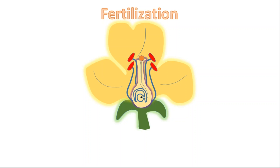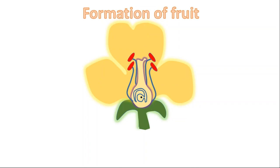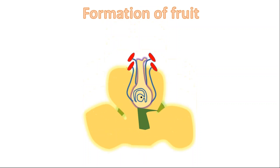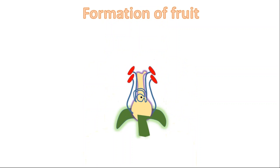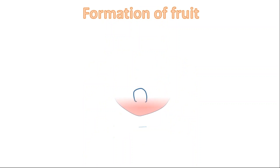After fertilization, the parts of the flower fall off and the ovary grows into the fruit.